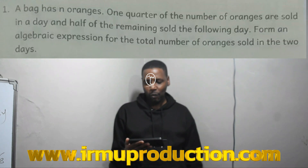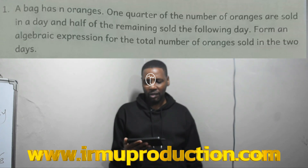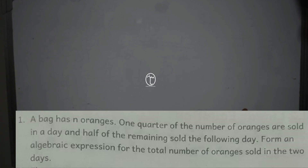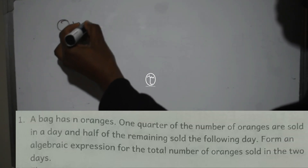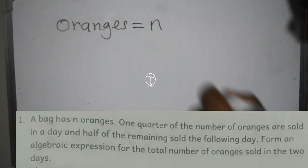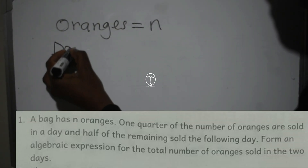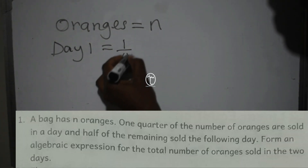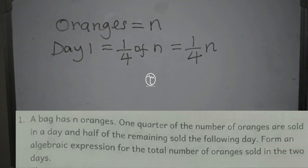The first question reads: a bag has N oranges. One quarter of the number of oranges are sold in a day, and half of the remaining sold the following day. Form an algebraic expression for the total number of oranges sold in the two days. We know the number of oranges is represented by letter N. Day one, he sold a quarter of N, which is one quarter N.